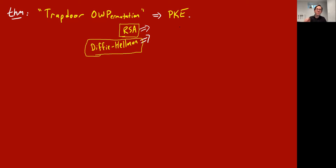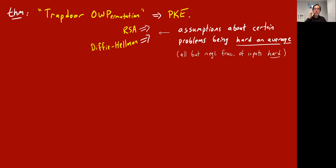People are not that satisfied with this state of affairs. In practice RSA seems believable and gives us public key encryption, but it's broken by quantum. These are all assumptions about certain problems being hard on average — it's not just that they're hard in the worst case, but even when you choose a random input, all but a negligible fraction of inputs are hard. For example, it's hard to factor the product of two random primes — an assumption related to RSA.